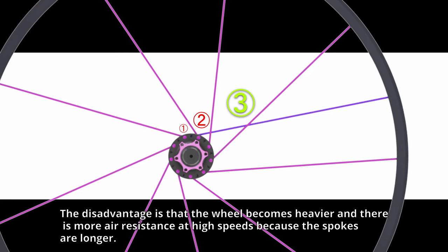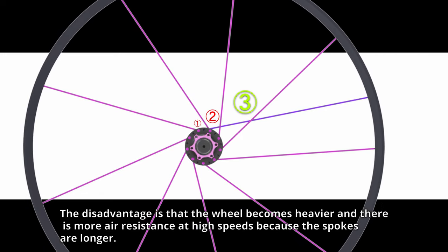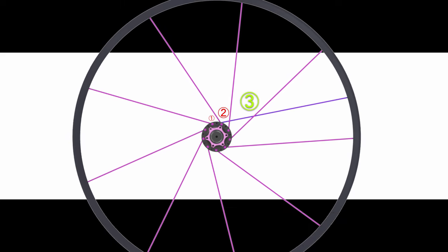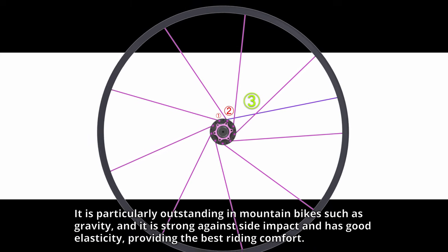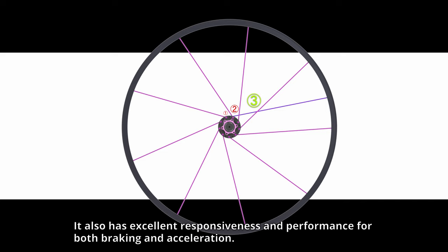The disadvantage is that the wheel becomes heavier and there is more air resistance at high speeds because the spokes are longer. It is particularly outstanding in mountain bikes such as gravity, and it is strong against side impact and has good elasticity, providing the best riding comfort. It also has excellent responsiveness and performance for both braking and acceleration.